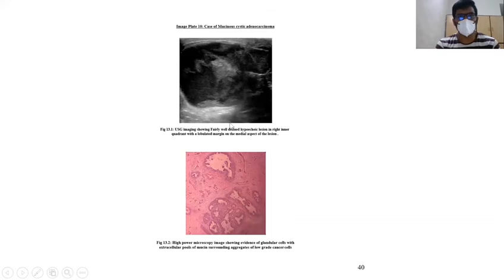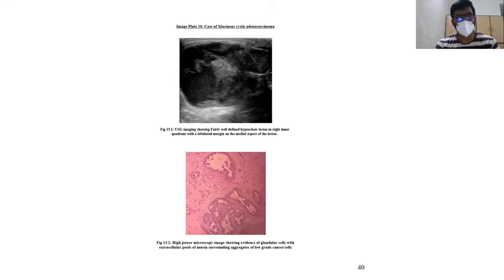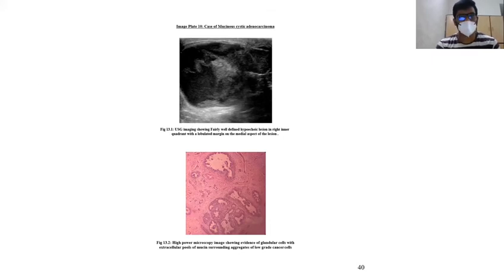This is a case of mucinocystic adenocarcinoma. Here we can see a fairly well-defined hypoechoic lesion in the right inner quadrant with a lobulated margin on the medial aspect of the lesion. The microscopic picture shows evidence of large glandular cells with extracellular pools of mucin surrounding aggregates of low-grade cancer cells.